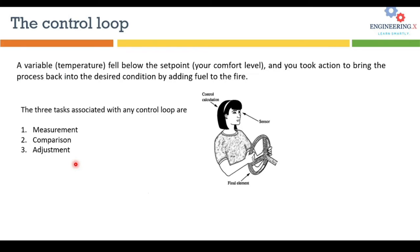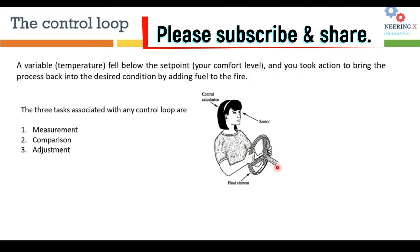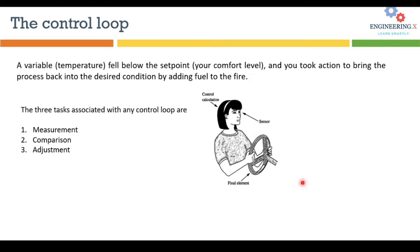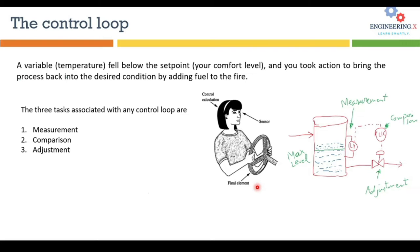Another example for better understanding: when you are driving, your eyes act as a sensor measuring the distance between your car and the next car. In your brain you are comparing that distance to the safe distance, and then according to that you are moving the steering wheel — that is called the final control element. So your eyes are the measurement, your brain is the comparison — in instrumentation we call it the controller — and the steering wheel is the final element.